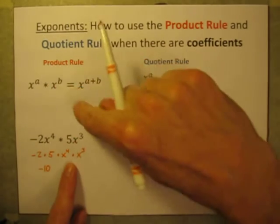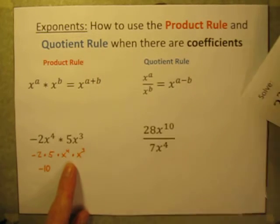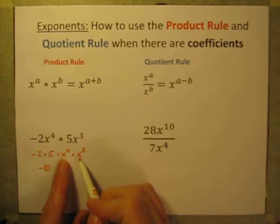Well, that's a case where we can just use this product rule. And of course, the product rule states that when the bases are the same, they're both x's, you just add the exponents.